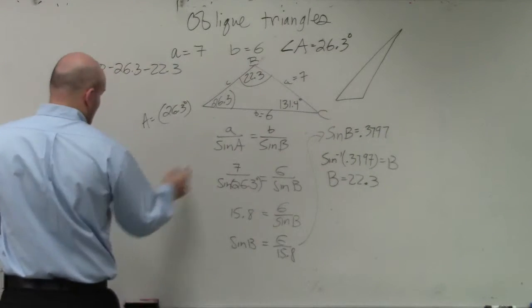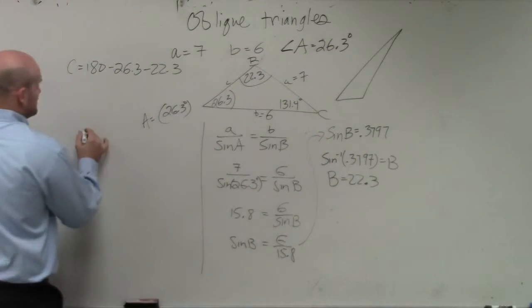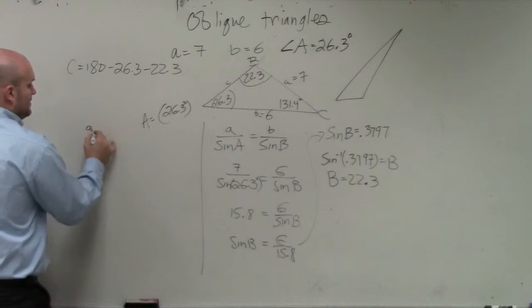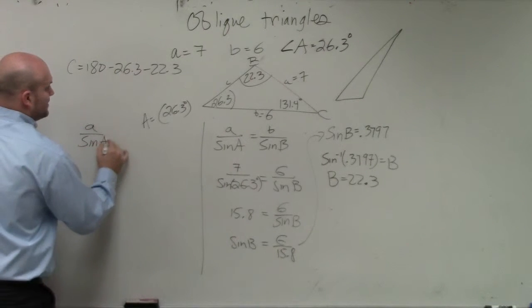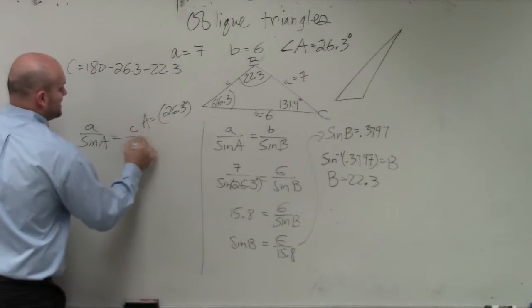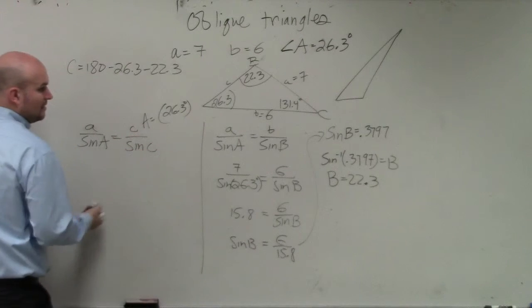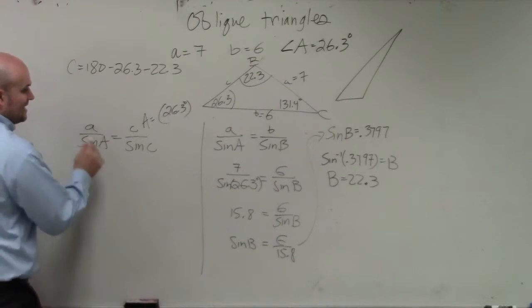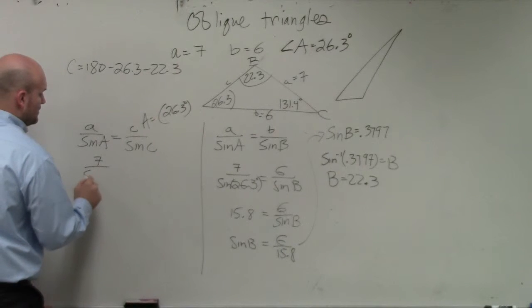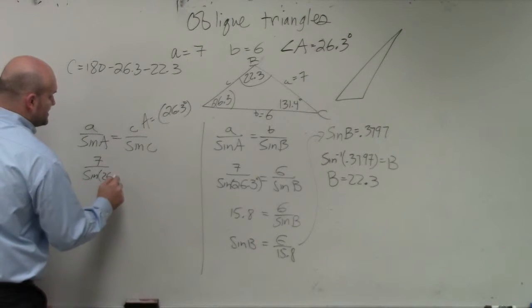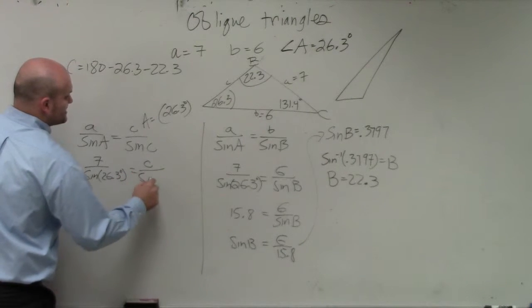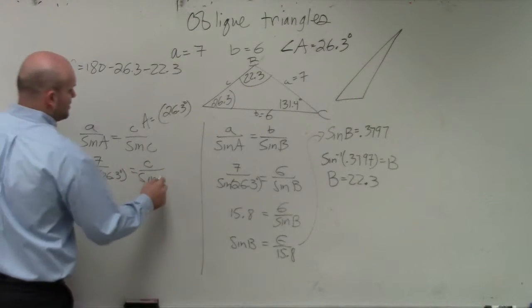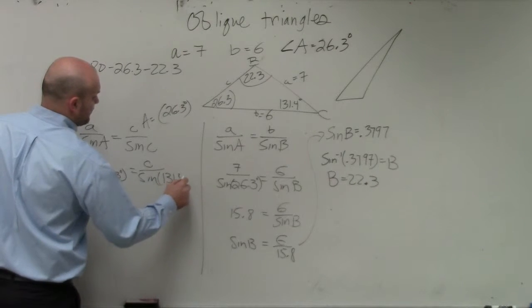So now I'll do another law of sines. So I'll do a over sine of A is equal to now c over sine of C. Well, now I know what this angle C is. A is 7 over the sine of 26.3 degrees equals c over the sine of C, which is 131.4 degrees.